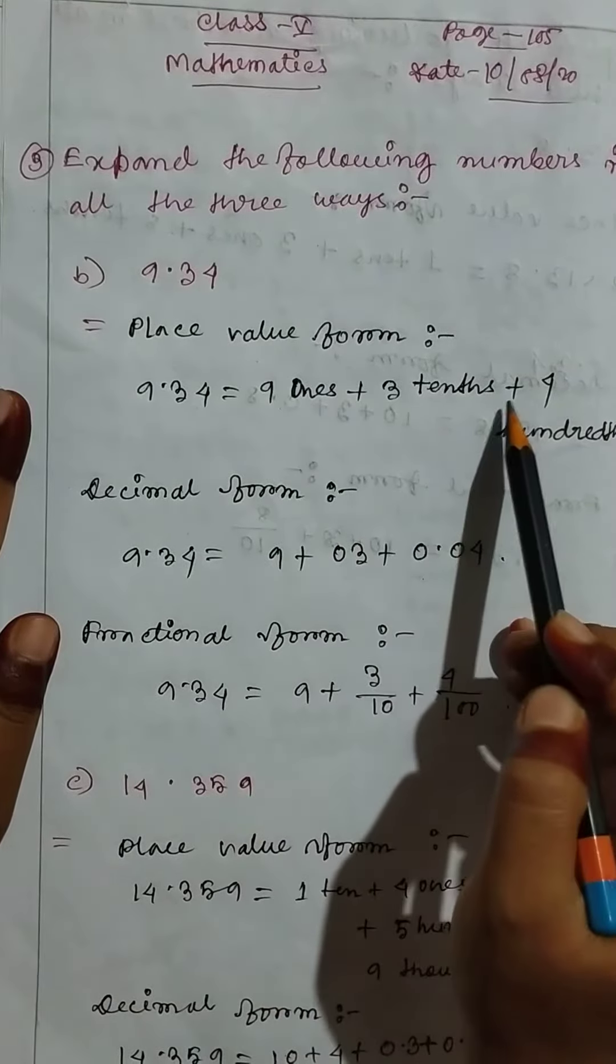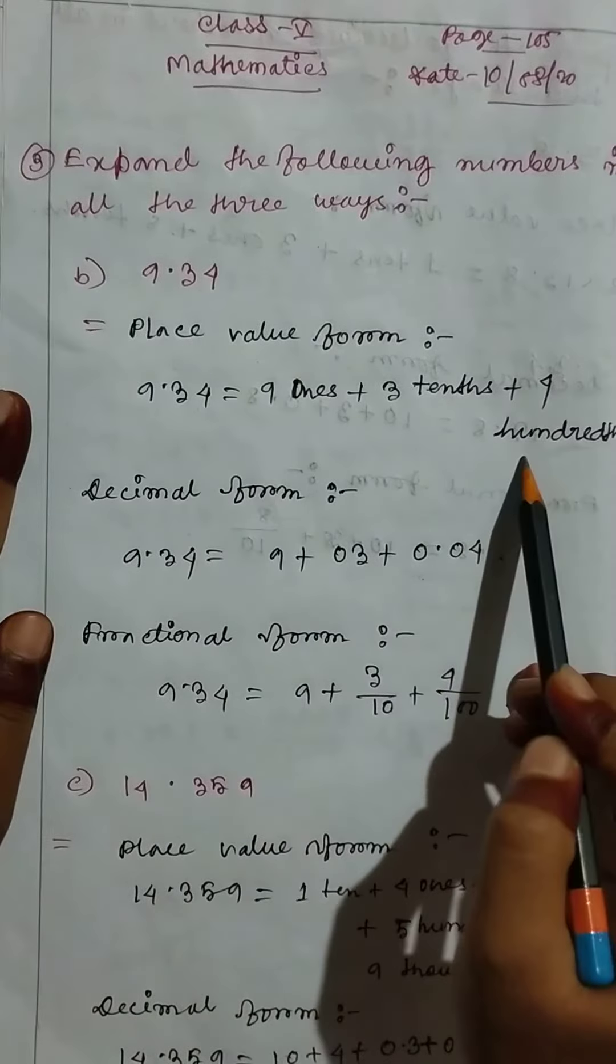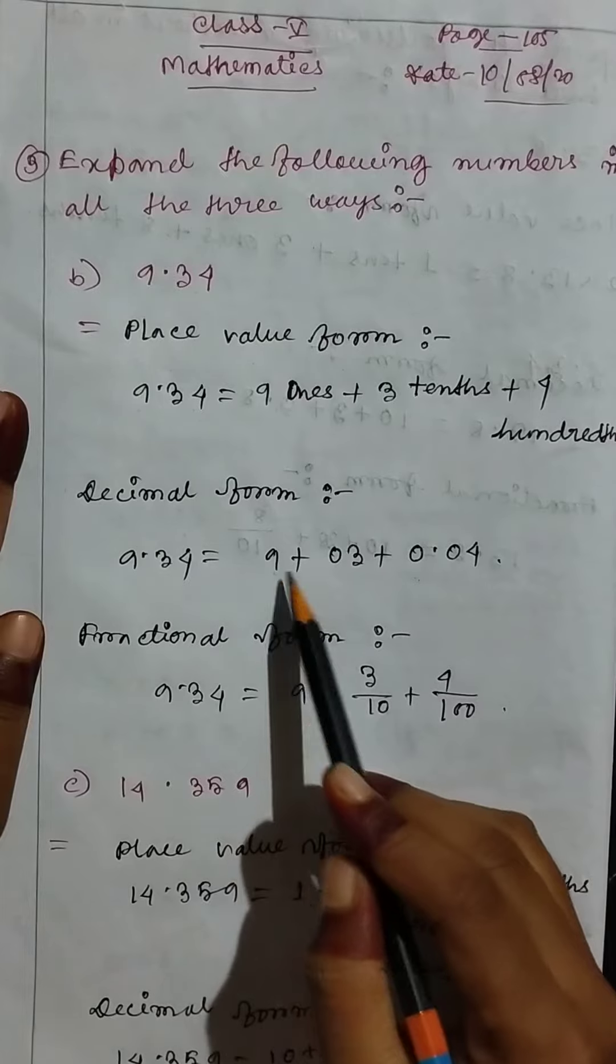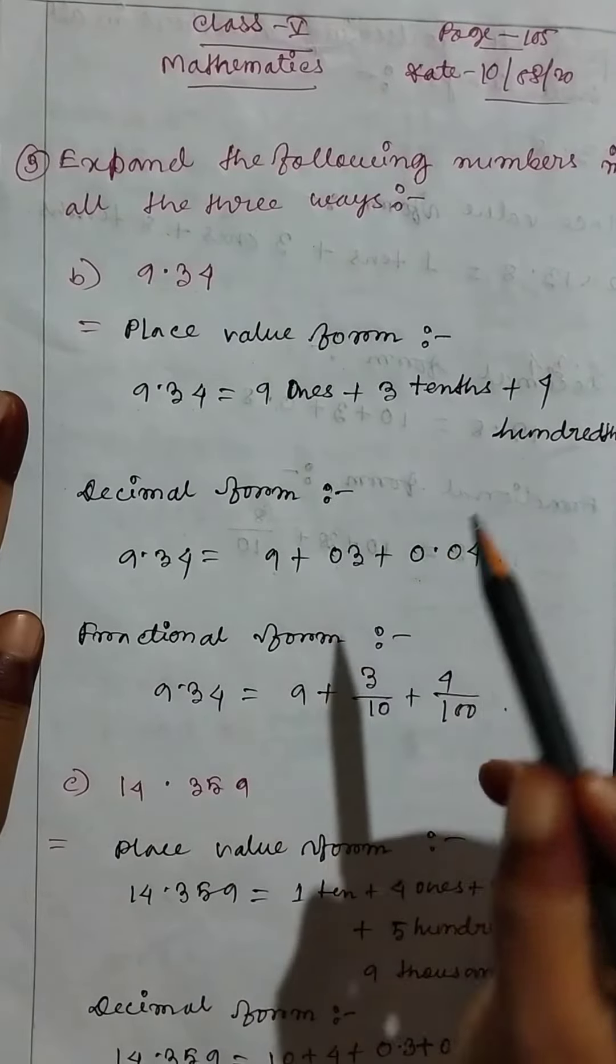Then decimal form: 9.34 equals 9 plus 0.3 plus 0.04.